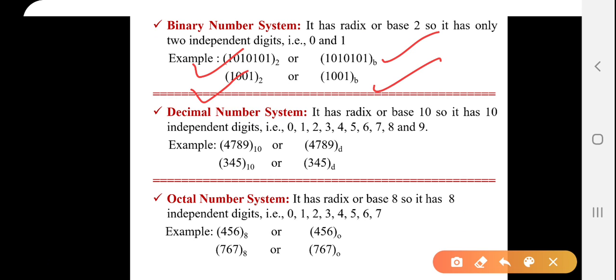In case of decimal number system, it has radix or base 10, so it has 10 independent digits like 0, 1, 2, 3, 4, 5, 6, 7, 8, 9, right from 0 to 9. For representing the decimal number system, we need to keep 10 in the base of 4789 or 345. Instead of writing 10 as a base, we also can write d as a base.